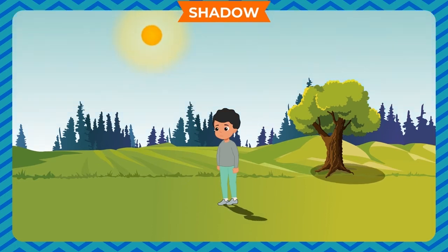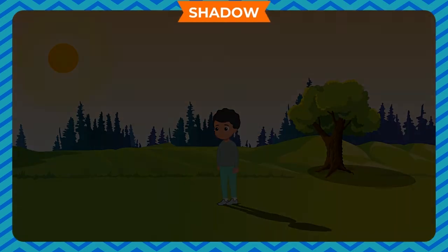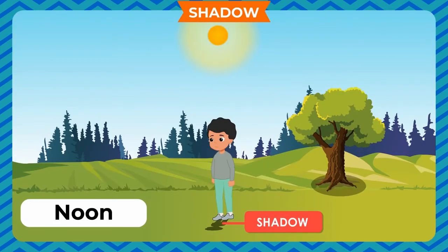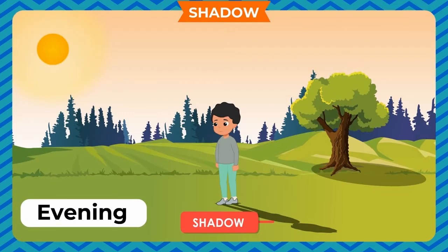The size of the shadow depends on the position of the light source. You can check this by standing in the sunlight at different times of the day. Shadows are shortest at noon because at noon the sun shines overhead. Shadows are longer in the morning when the sun rises and in the evening when the sun sets.